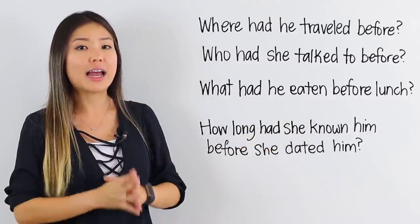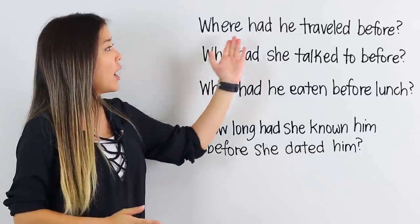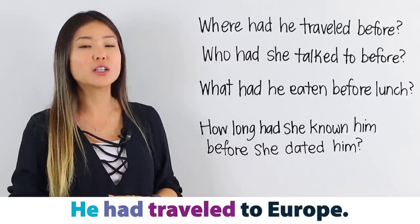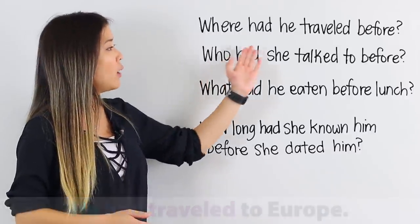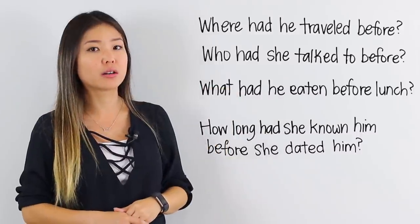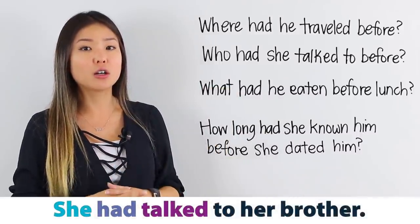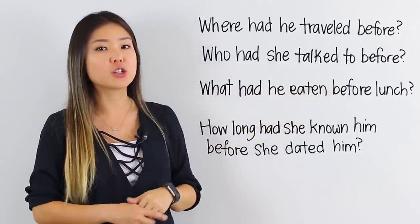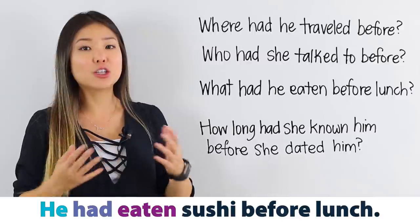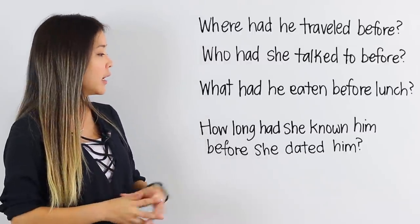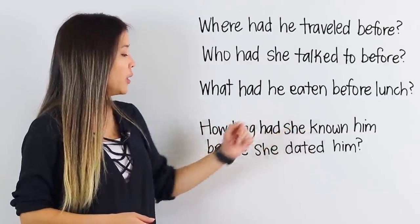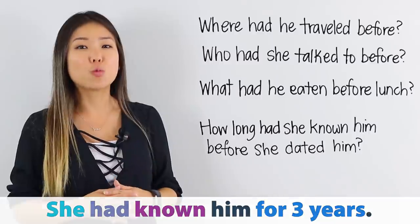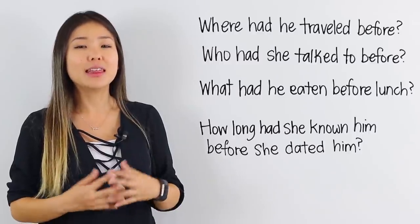Let's take a look at how to answer these questions. 'Where had he travelled before?' — 'He had travelled to Europe.' 'Who had she talked to before?' — 'She had talked to her brother.' 'What had he eaten before lunch?' — 'He had eaten sushi before lunch.' And finally, 'How long had she known him before she dated him?' — 'She had known him for three years.' That is one possible answer.